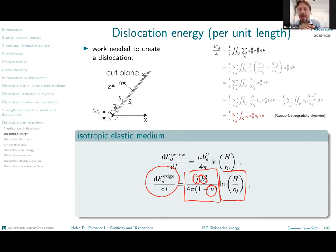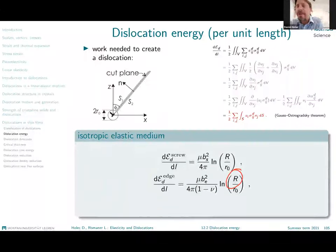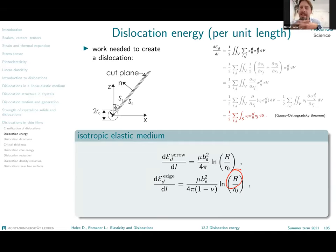The small r₀, sometimes also called rₓ, corresponds to the radius of the core — that's where the c comes from, from the word 'core'. That's the region where we actually have broken bonds and plastic deformation. Capital R corresponds to the outer integration radius, meaning that the energy of the edge dislocation diverges in an infinitely large medium. Capital R is normally taken as the distance from the free surface to the grain boundary, or half of the distance between dislocations if we speak about a dislocation array.